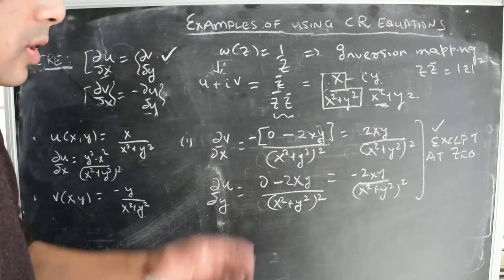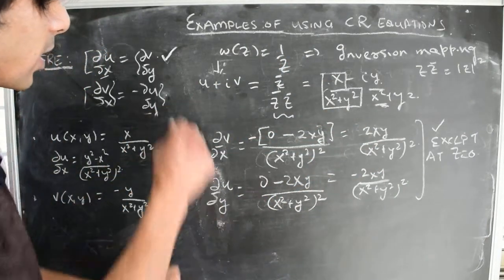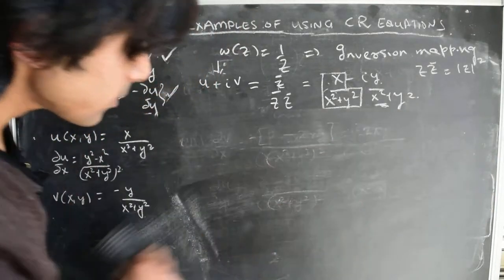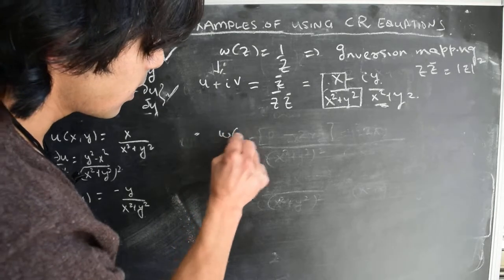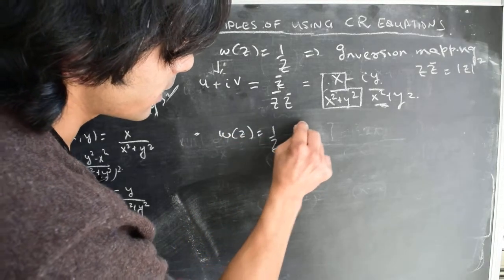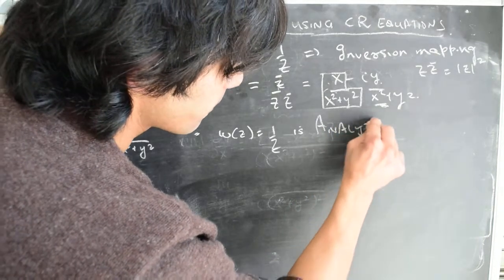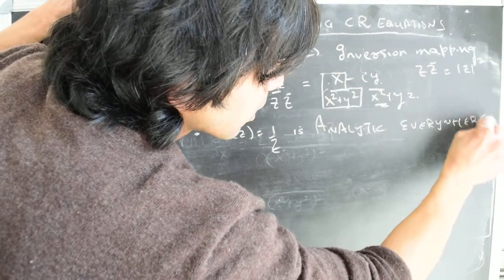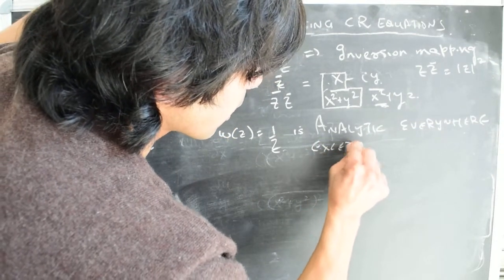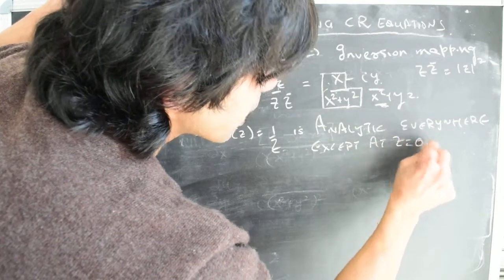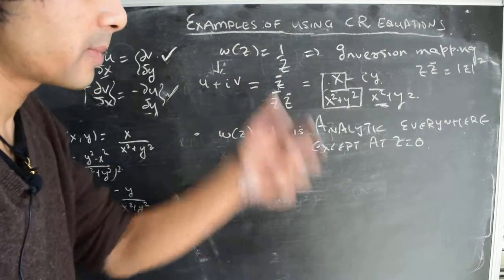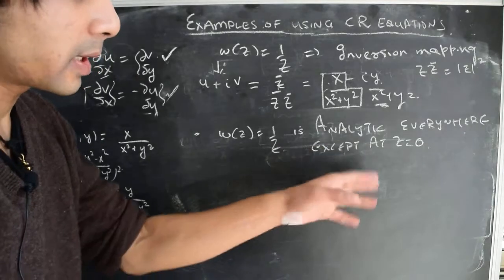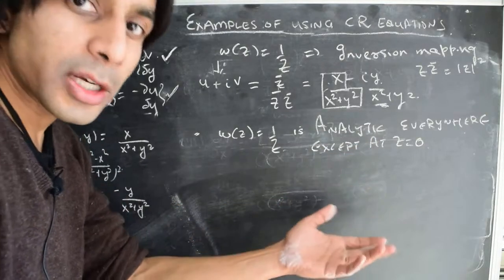Except for the point Z = 0, both Cauchy-Riemann conditions are satisfied everywhere else in the complex plane. Therefore we can claim that W(Z) = 1/Z is analytic everywhere except at Z = 0. We will discuss more about this special point Z = 0 in relation to the inversion mapping later, as it has some very beautiful consequences.